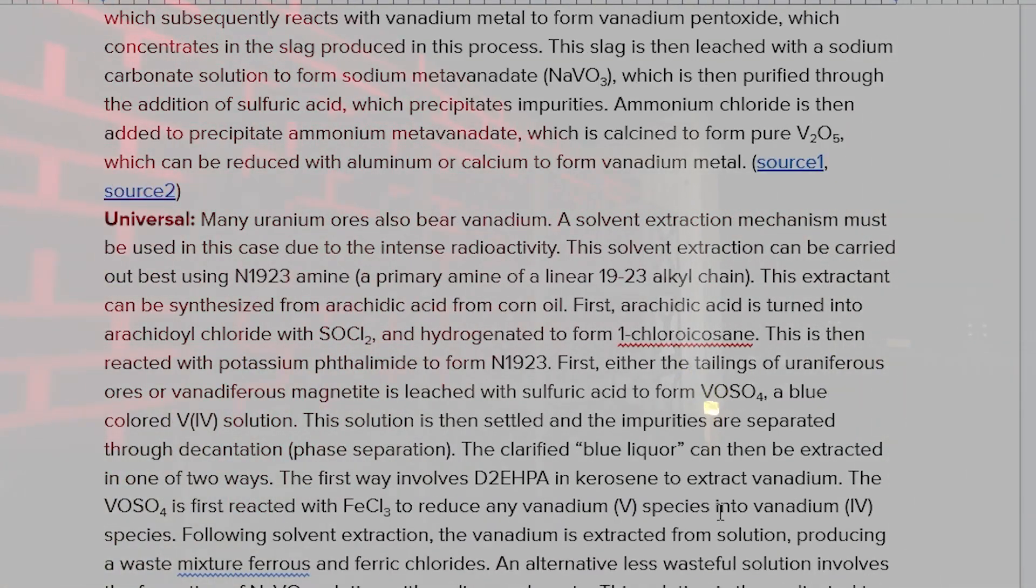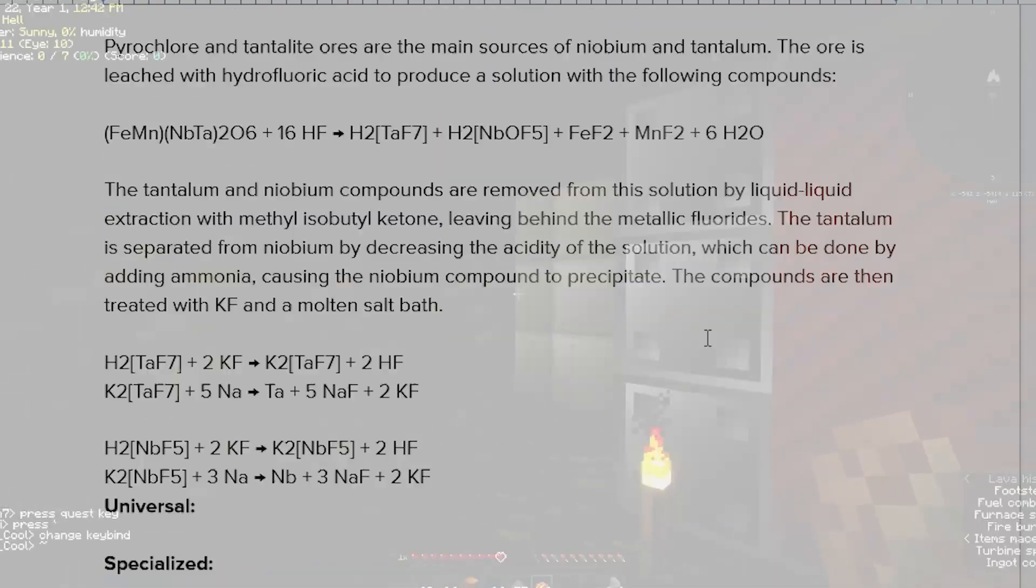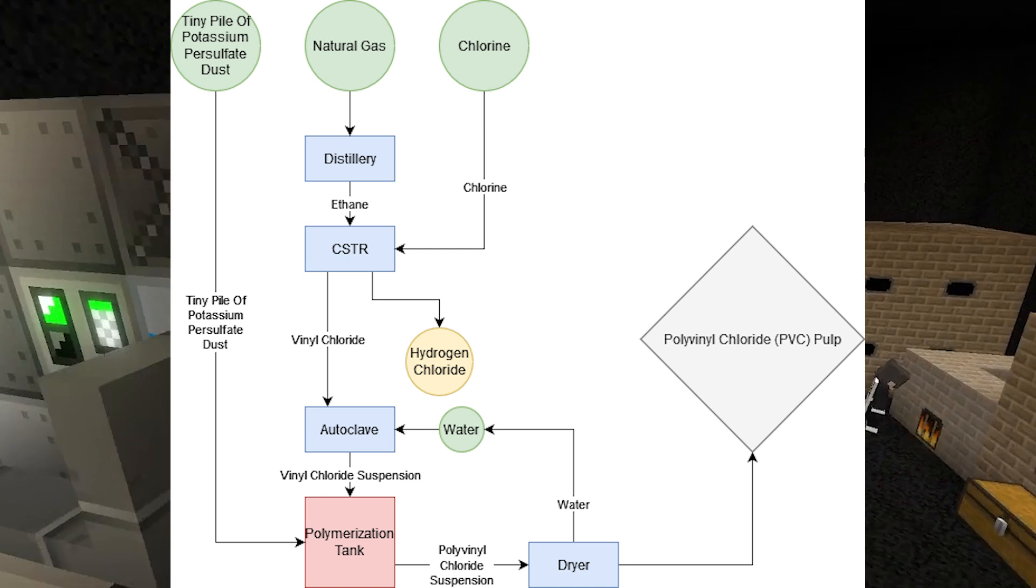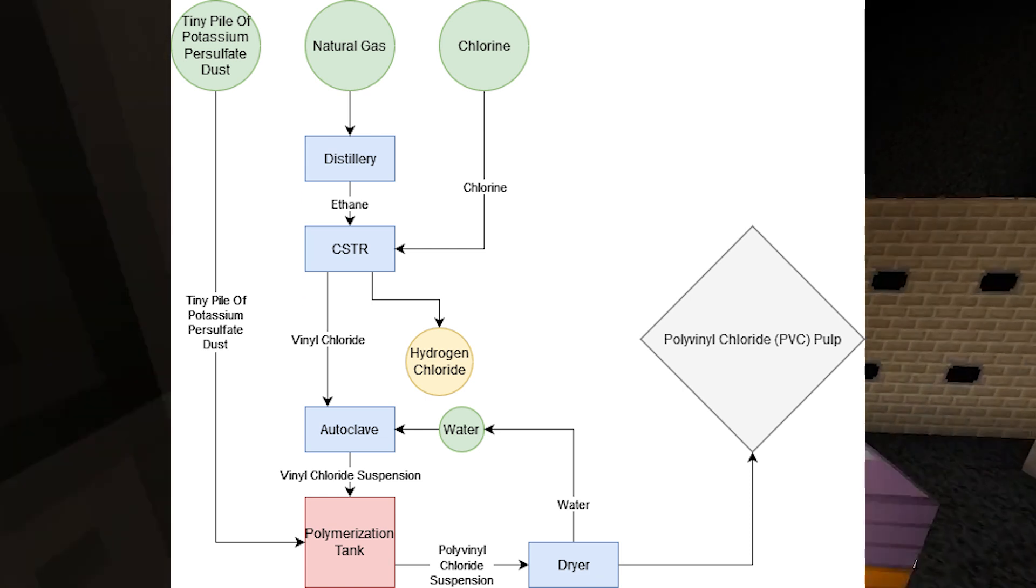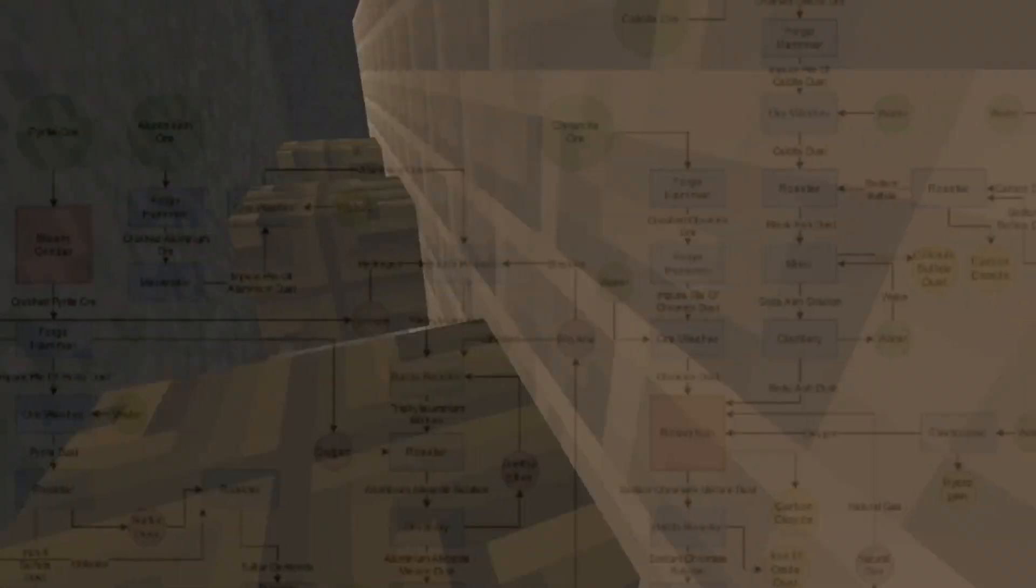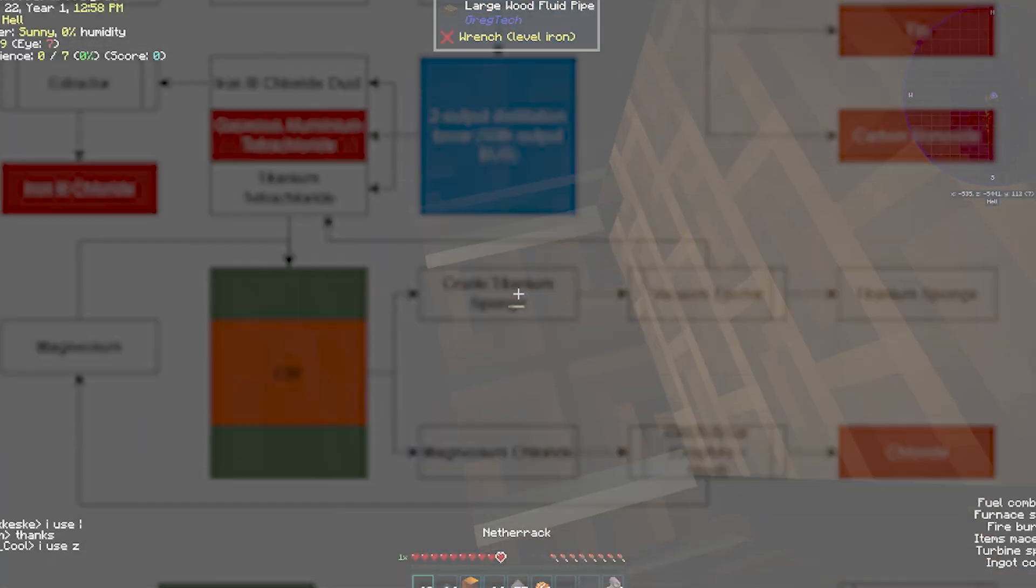Then PlanetMe decided that it was a good idea to add chains for every element. In total, he planned over 95 pages of pure Gregic content. Then, he decided to gregify the plastics. Now polyethylene takes 5 steps, PTFE is now closer to 26, and don't even think about PBI.